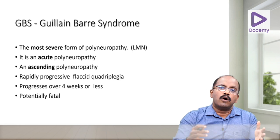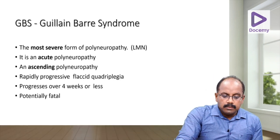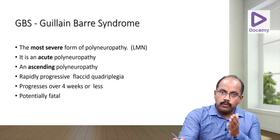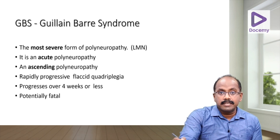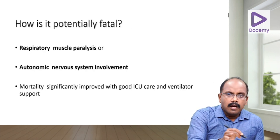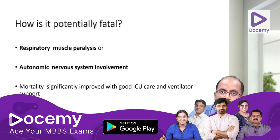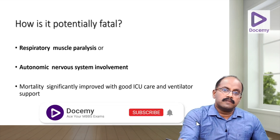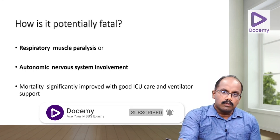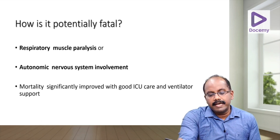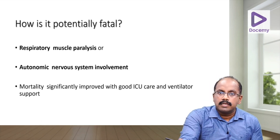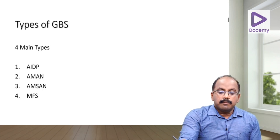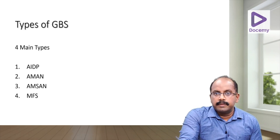GBS is a rapidly progressive flaccid quadriplegia — all four limbs and the body become weak. It progresses over four weeks or less and is potentially fatal due to respiratory muscle paralysis or autonomic nervous system involvement. With good ICU care and ventilator support, the mortality rate has come down to less than five percent.